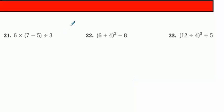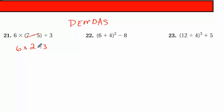Here's another one. Any parentheses? Yes. Seven minus five would be two. Now I rewrite the problem: six times two divided by three. I've already done parentheses, no exponents. Multiplication and division — whichever comes first. Multiplication comes first: six times two is 12, then divided by three gives me four.